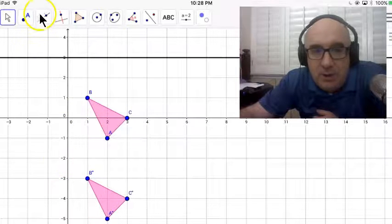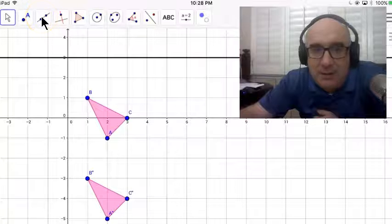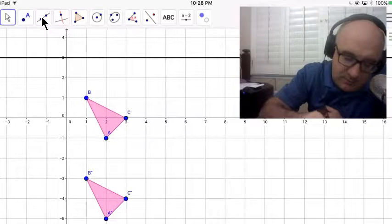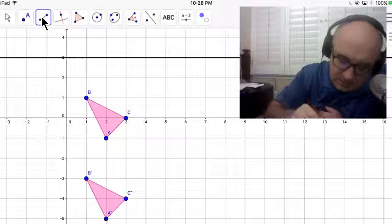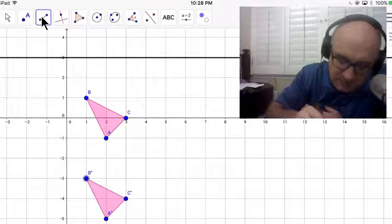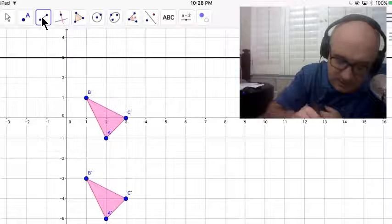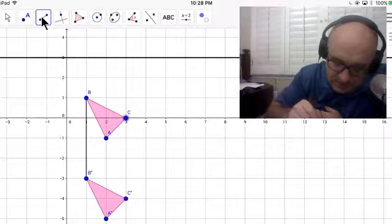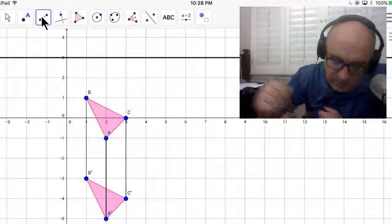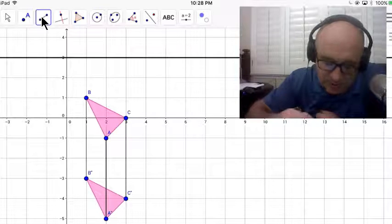We would want to know how far it went down. So if we took our segment there and we just measured any of these distances here, we would notice that all of these went down 1, 2, 3, 4.